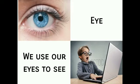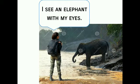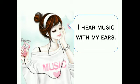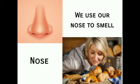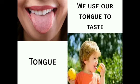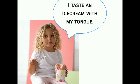Eyes — we use our eyes to see. Example: I see an elephant with my eyes. Ears — we use our ears to hear. Example: I hear music with my ears. Nose — we use our nose to smell. Example: I smell a flower with my nose.